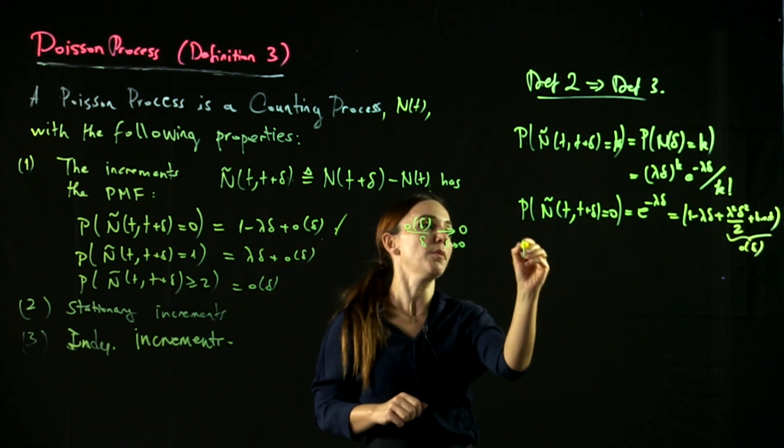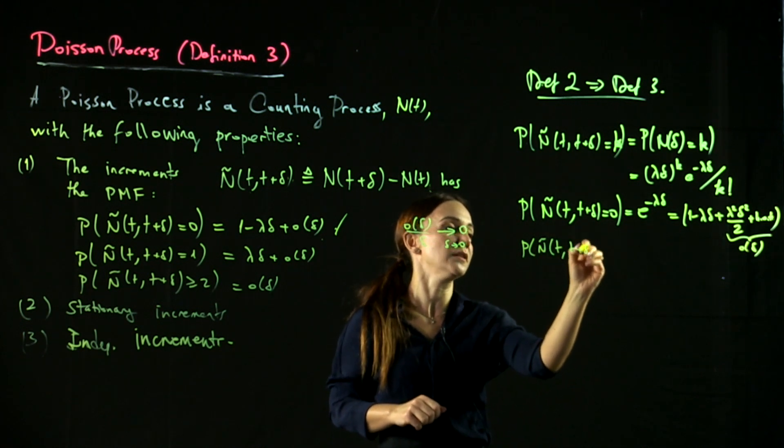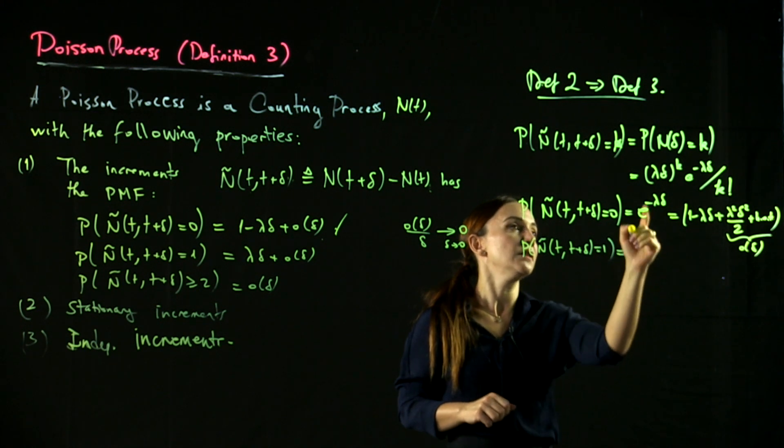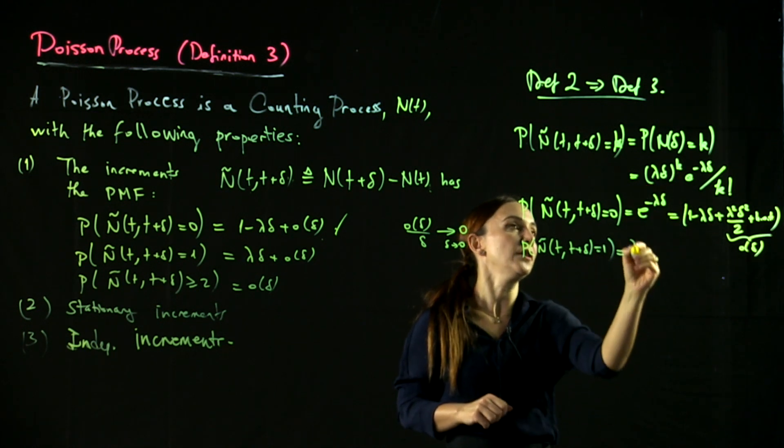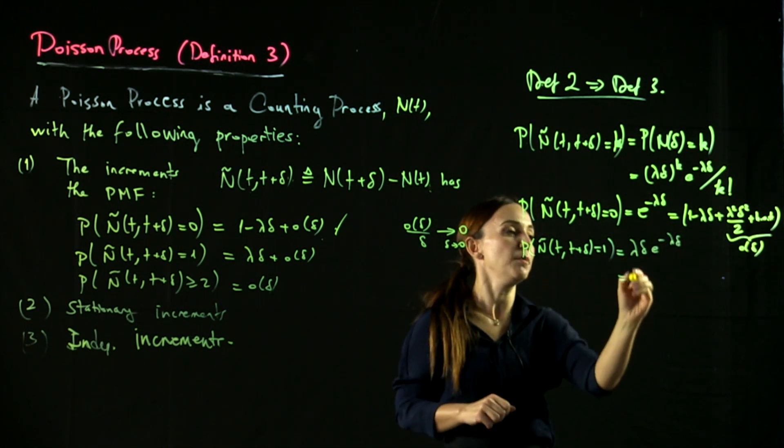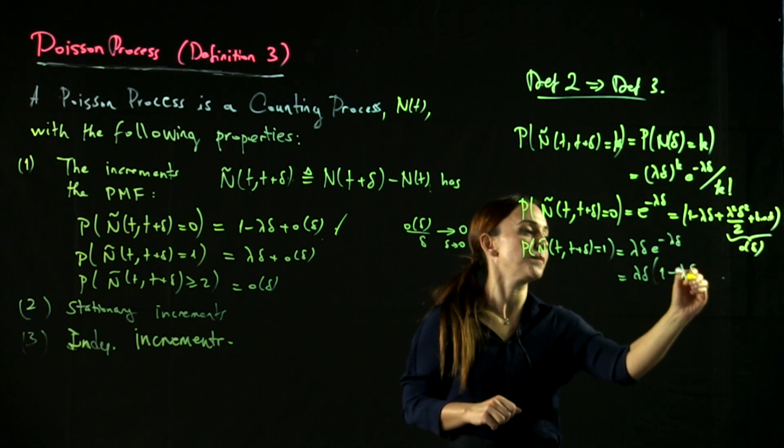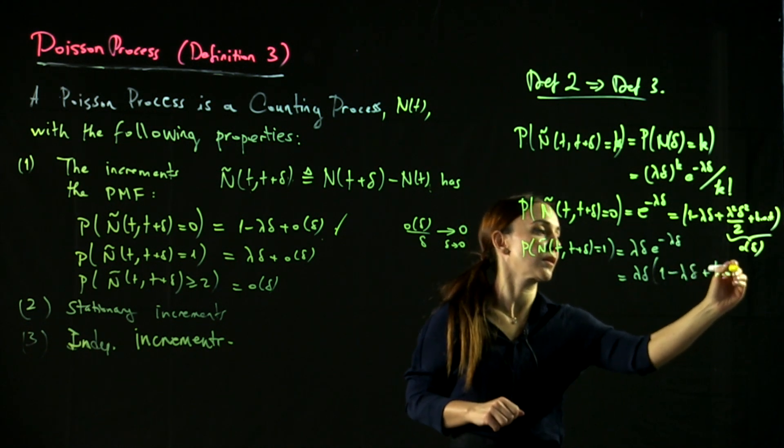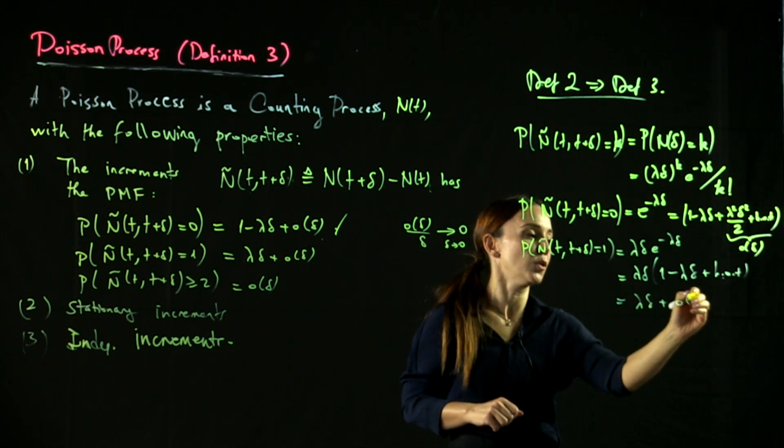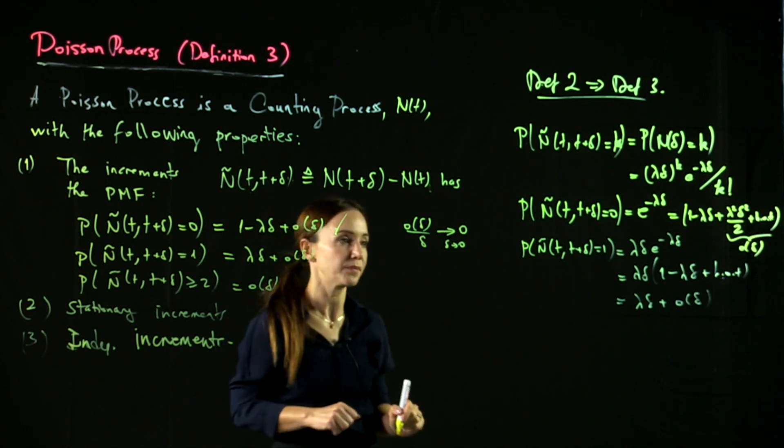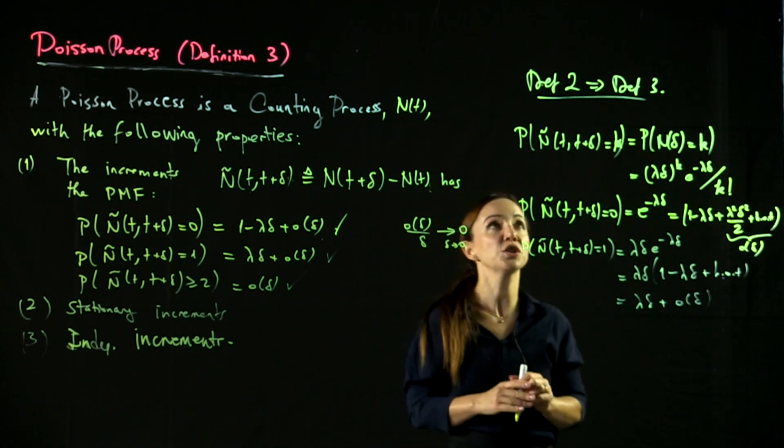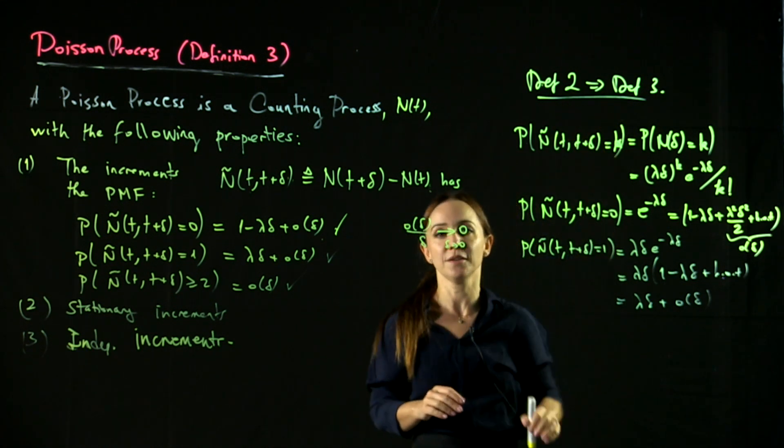Secondly, the probability that n tilde of t, t plus delta equals 1 is given by, if you substitute 1 here, lambda delta e to the minus lambda delta. Well, use the same Taylor series expansion. And we find lambda delta plus little o of delta, which is consistent with this. And this can also be verified in the same way. So we have shown that definition 2 implies definition 3.